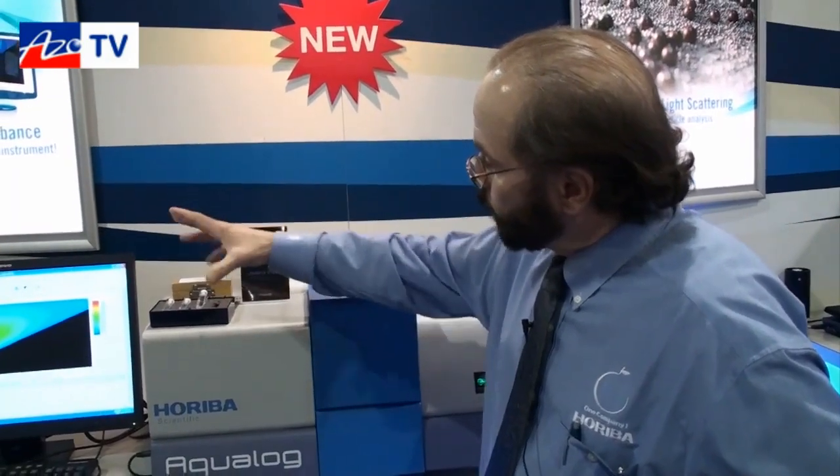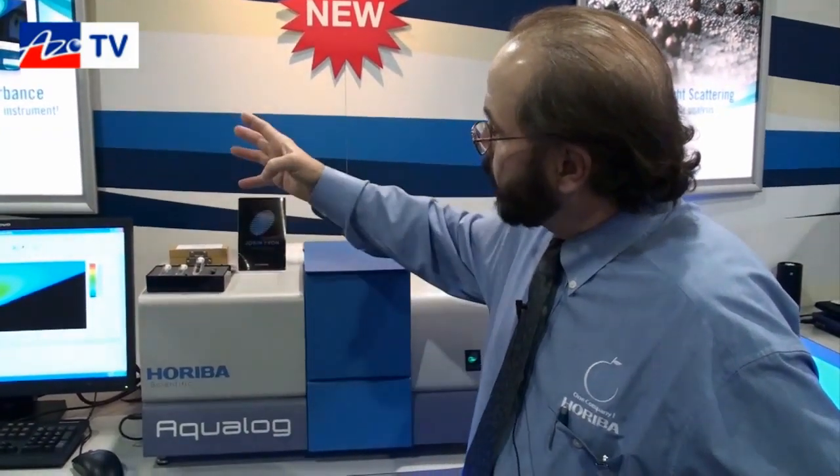Adam, just before we finish up, what are typical applications for the Aqualog? You were saying before that it gets used for water analysis. What other things do you use it for? Well, primarily it's for analyzing dissolved organic matter. The compound is known as CDOM. This is almost anything that's dissolved in water.